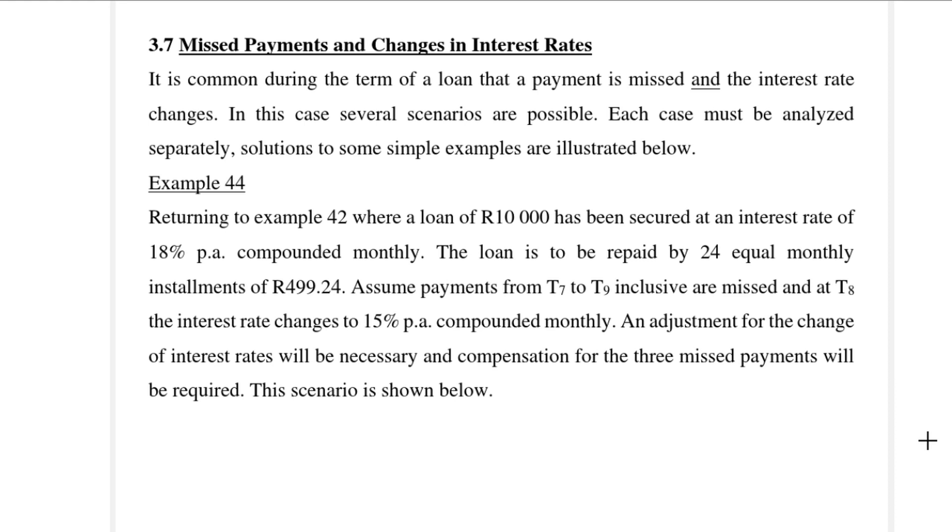And then we assume that payments from T7 to T9 are missed. And then at T8, the interest rate changes from 18% per annum to 15% per annum. And we need to make an adjustment for the change of interest rate and also to compensate for the three missed payments. And just a note here that in Example 43, where we looked at changes in interest rate, the interest rate changed from 18% to 21%. So this example is just slightly different because the interest rate changes from 18% to 15%.